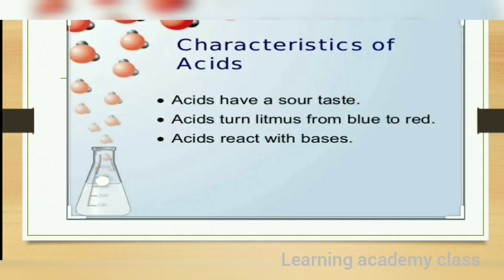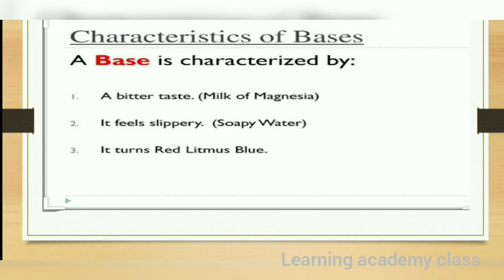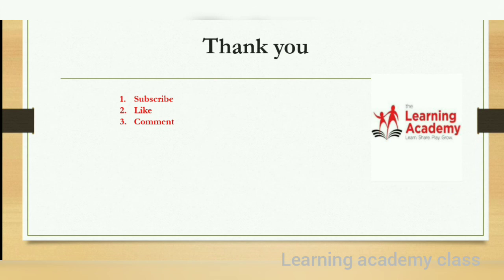To summarize: acids have a sour taste and turn blue litmus paper to red, and acids react with bases. Bases are characterized by a bitter taste — like milk or magnesium — feel slippery like soapy water, and turn red litmus paper to blue. I hope you understand about acids and bases.